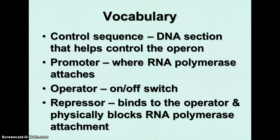A promoter is where the RNA polymerase attaches. In these operons, you also have an operator, which is basically the on-off switch. If the operator is on, then the gene will be expressed and the DNA will be transcribed and translated. If the operator is off, then it won't. Oftentimes, the operators are turned off by means of something called a repressor — a molecule which binds to the operator and physically blocks the RNA polymerase from attaching. If RNA polymerase can't attach, you can't transcribe the DNA sequence into messenger RNA, and therefore you're not going to get the protein made.